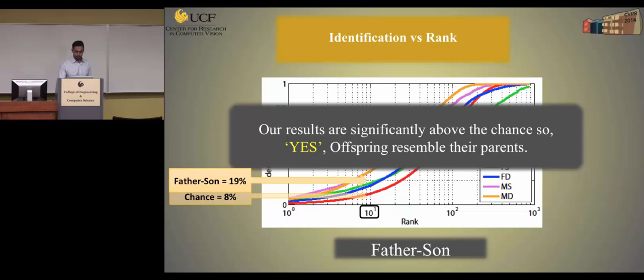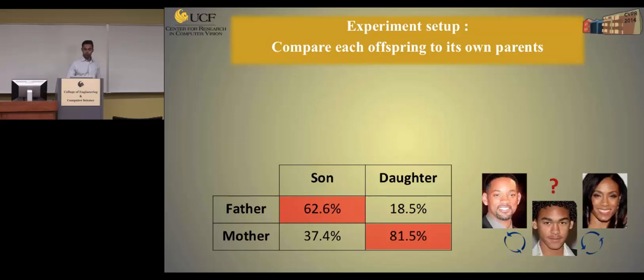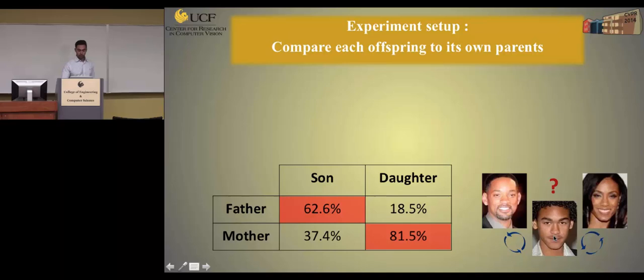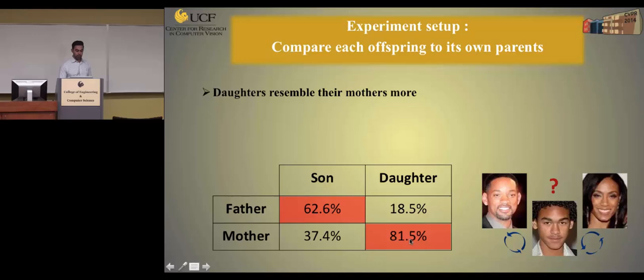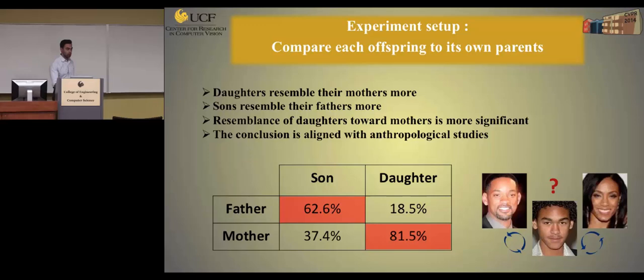Now let's look at the second question: do offspring resemble one parent more than the other one? To answer this, we compare each query image with his or her own parents in the family. We gave one vote based on which resemblance score was higher. On 100 families, we observed that daughters resemble their mother 81% of the time, and sons resemble their father 62% of the time. The mother-daughter resemblance is much more significant than father-son, which is also aligned with anthropology studies — daughters resemble their mother regardless of age, while the father-son and mother-son resemblance changes with age.